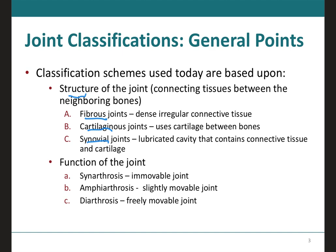Fibrous joints, like the name says, will be made of dense irregular connective tissue. Cartilaginous joints will be made up of cartilage between the bones, usually hyaline cartilage. The synovial joints will actually be made up of both — connective tissue and cartilage — and in the middle they will form a cavity containing a fluid. This fluid is important because it will lubricate the cavity to decrease friction between the two bones at that specific joint.